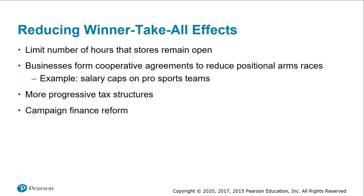If winner-take-all markets have harmful consequences, what can be done? Frank and Cook suggest four approaches. First, societies can enact laws limiting the number of hours stores remain open, ensuring parity among businesses and preventing positional arms races. Without such laws, one business extends its hours for an advantage, competitors follow, parity is restored, but all employees bear the burden of longer hours. These regulations are often called blue laws. Second, businesses can form cooperative agreements to reduce positional arms races, such as when professional sports team owners agree to establish a salary cap.